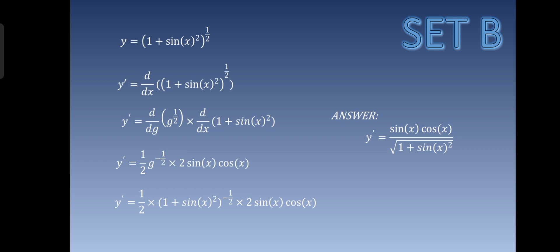After substituting and simplifying, y prime is equal to sine x cosine x over the square root of 1 plus sine x squared.